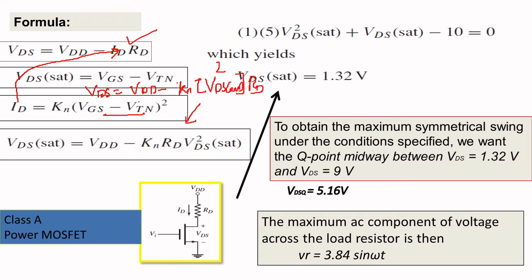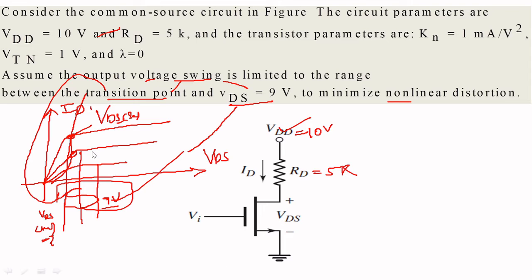With that only this equation is derived. The key thing to understand is the minimum point, that is the transition point, which comes from this equation including the ID equation. This can be expressed in terms of VDS saturation. This is the minimum point at which the swing starts. The swing starts at the quiescent point. The lower minimum point is at VDS saturation, and the higher maximum point is at VDS voltage.